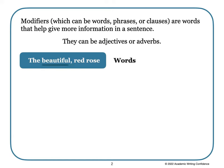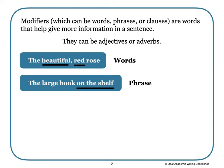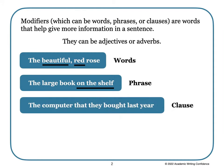For example, 'the beautiful red rose' — here the words beautiful and red modify or describe the rose. 'The large book on the shelf' — the phrase 'on the shelf' modifies 'the large book'; this is an example of a phrase. 'The computer that they bought last year' is an example of a clause — the clause modifies 'the computer.' All of these are modifiers.